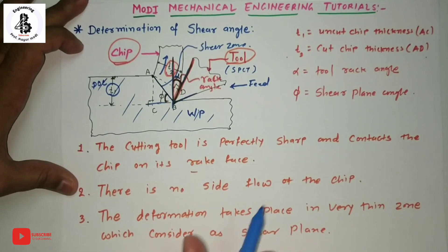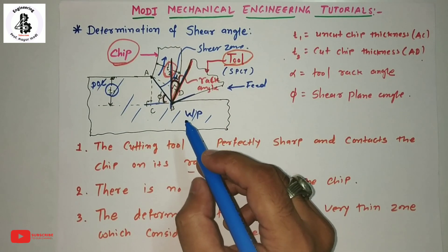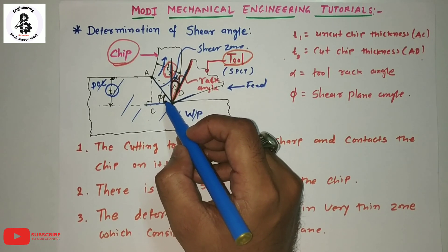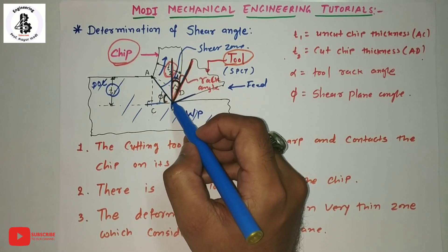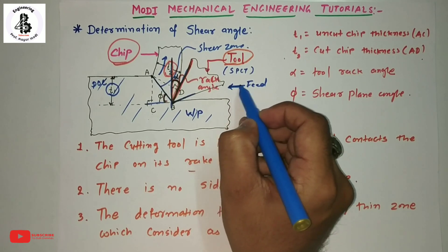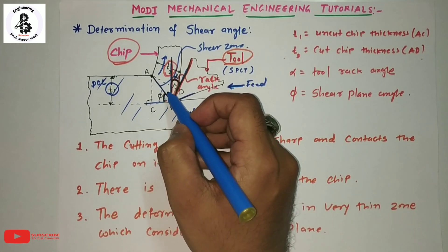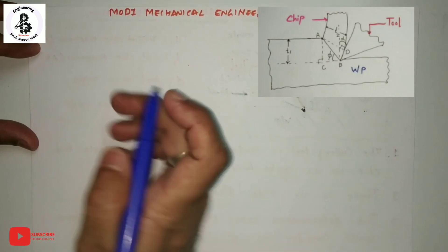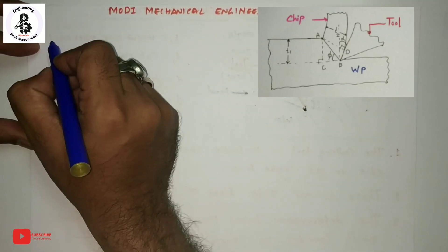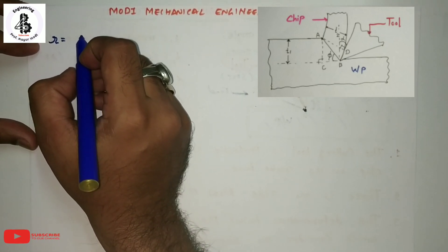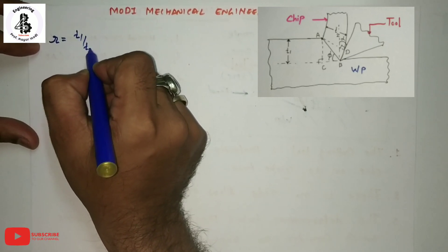Those are the three basic assumptions for determination of the shear plane angle. The shear angle phi is defined as the angle made by the shear plane A to B with the direction of tool travel, which is horizontal. Now, chip thickness ratio R is equal to T1 divided by T2, where T1 is the uncut chip thickness and T2 is the cut chip thickness.